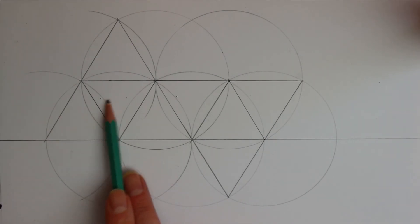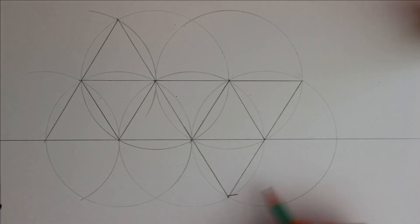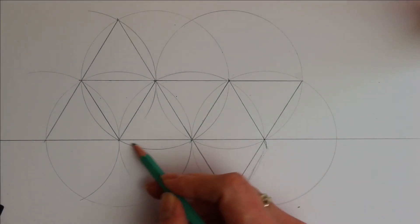We've got one, two, three, four, five, six, seven, eight. Again, draw some tabs. So it's a lot easier for when it's cut out.